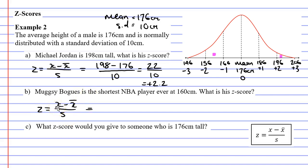X, which is our score, is the height of Muggsy Bogues at 160 centimeters. But then, we're going to subtract our mean, which is 176 centimeters. And then, we're going to put this over our standard deviation of 10.